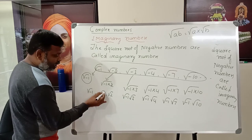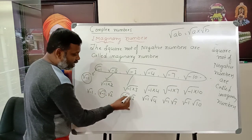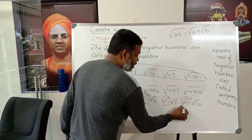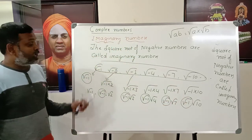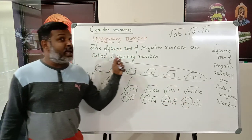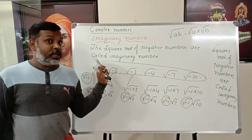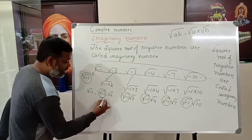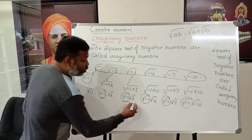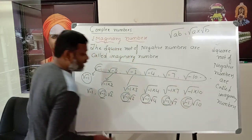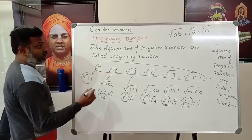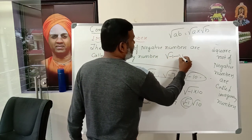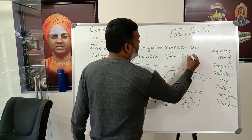The common factor in all these imaginary numbers is √(−1). This √(−1) is called the imaginary unit. Just as kg is a unit for mass and Celsius/Fahrenheit/Kelvin are units for temperature, √(−1) is the unit for imaginary numbers.